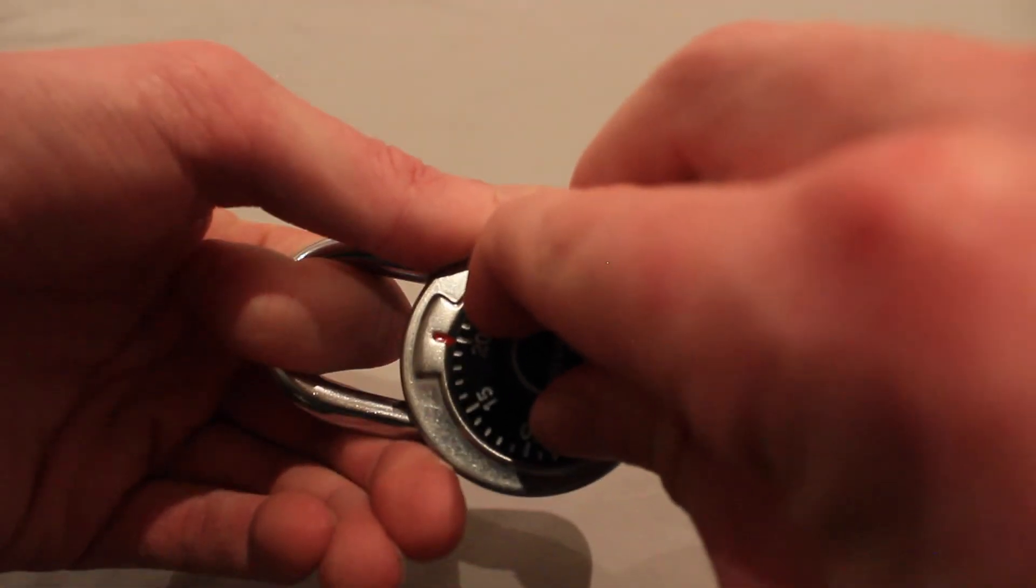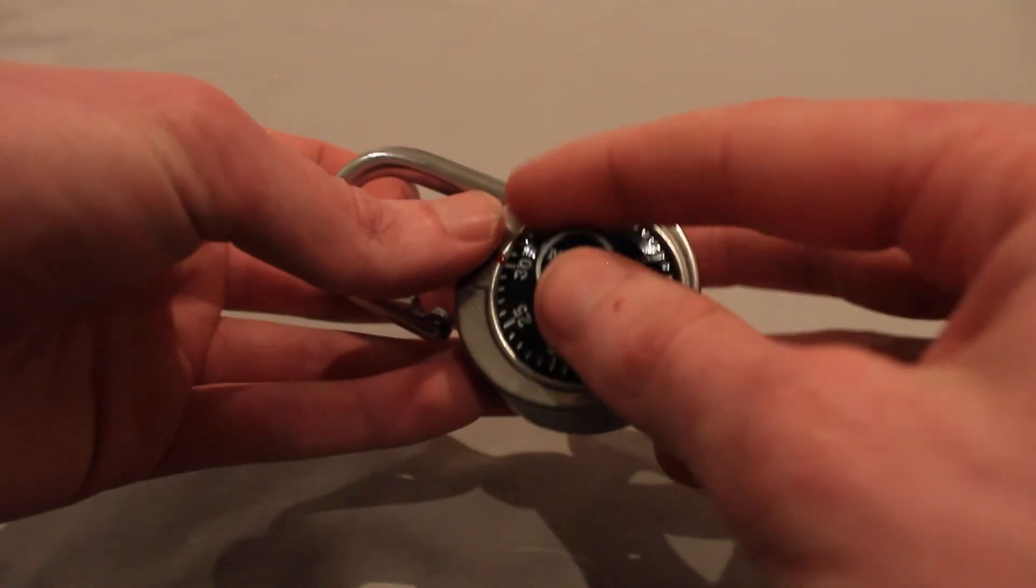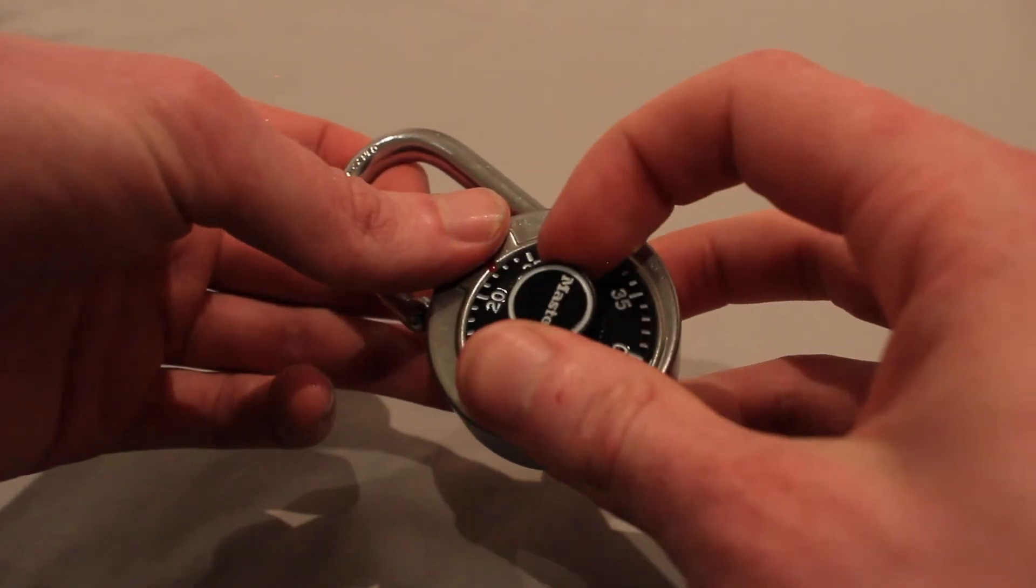Finally rotate the dial clockwise maintaining pressure on the shackle until the third and final key is found. The lock should jitter into an unlocked position allowing for many wins.